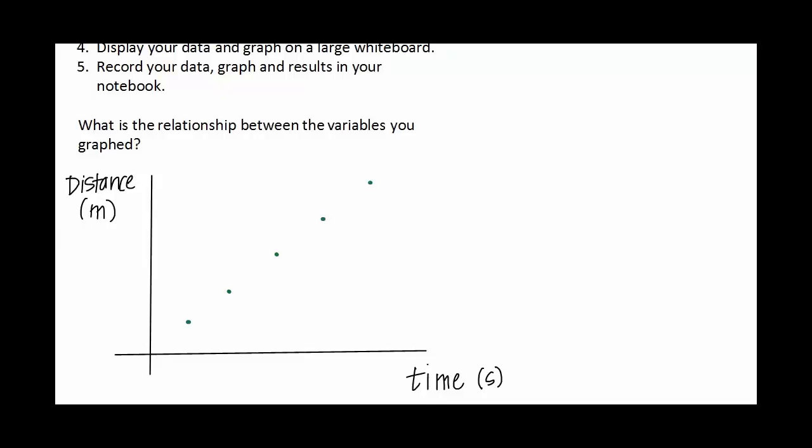And that shows a very consistent motion. I can draw a best fit straight line through those data points. Remember a best fit straight line goes through most of the data points with having the same number above and below. Now from math class we learn y equals mx plus b. That's the equation for a line.